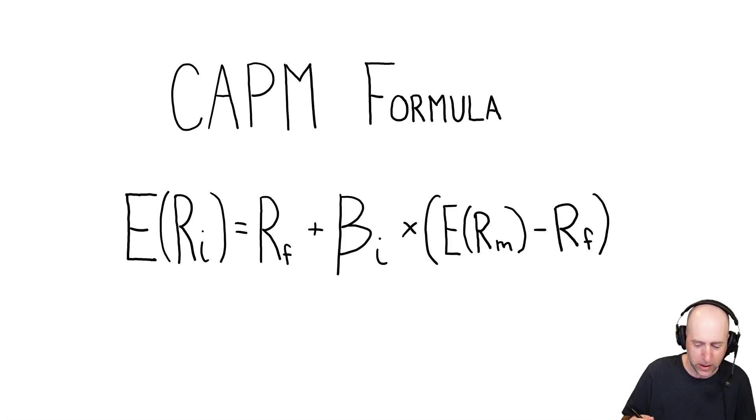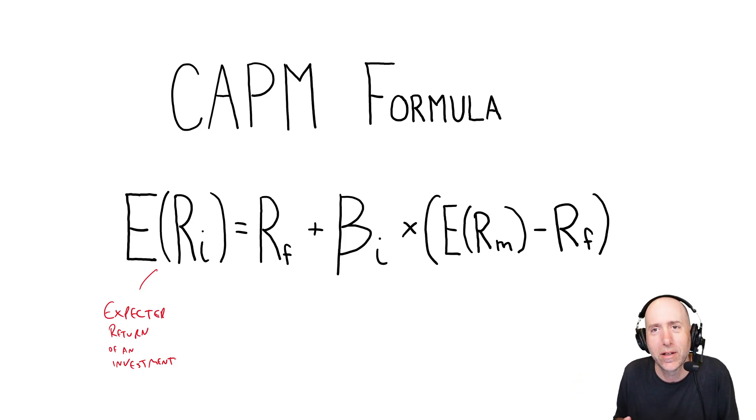So here's the formula, but it's a bunch of Greek to me anyway. There's some literal Greek letter in it. So the first, what we're solving for is the expected return of an investment, of an individual investment. And so obviously that's something you're very interested in. As an investor, you want to know what kind of return you can expect. So that equals RF, the risk-free rate.